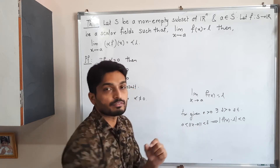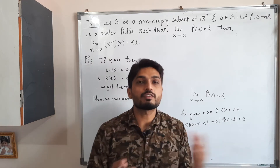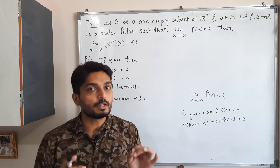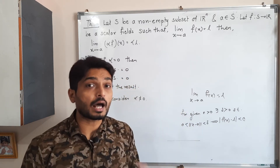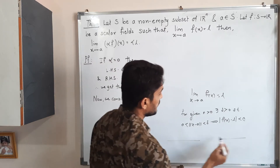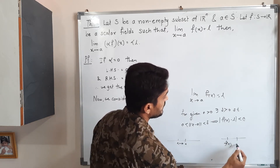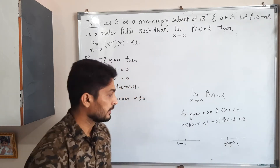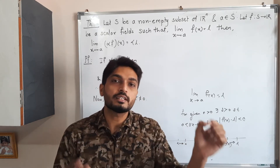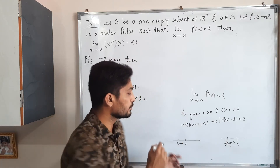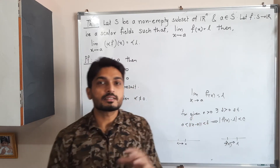The norm gives the distance between x and a. If the distance between x and a is less than delta — a very small number — then the difference between f(x) and l is also less than epsilon, another very small number. In simple terms, if x approaches a, then its image f(x) approaches l. This is the actual concept.